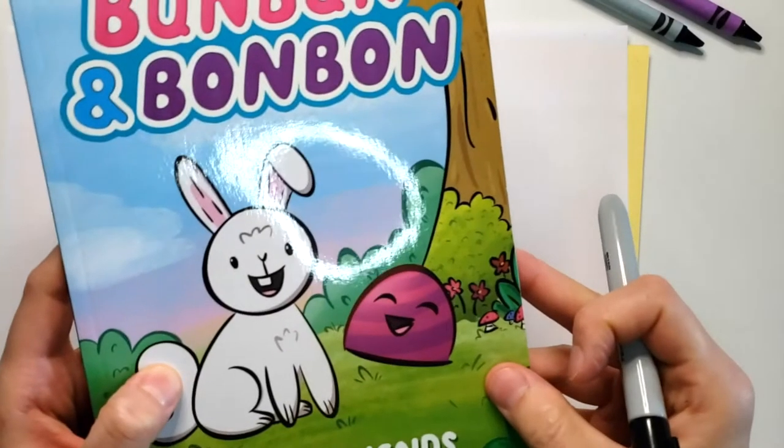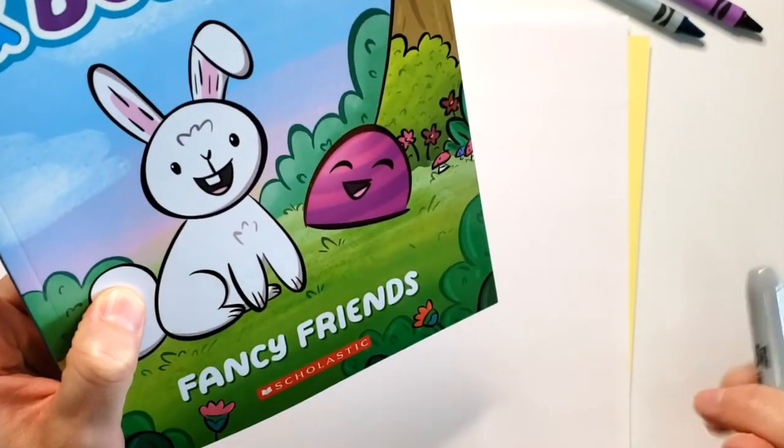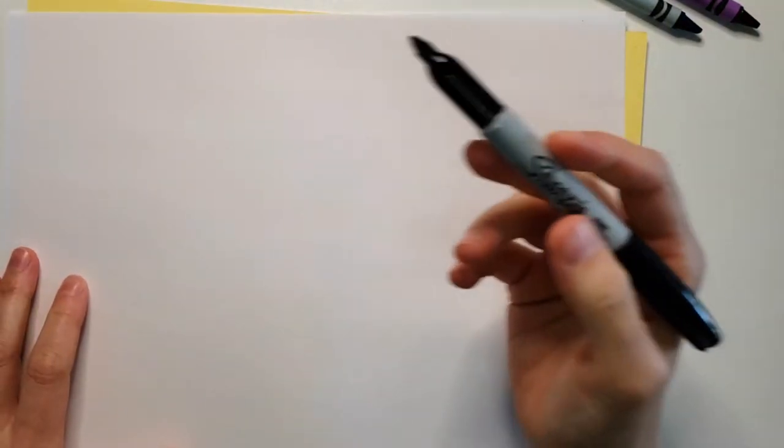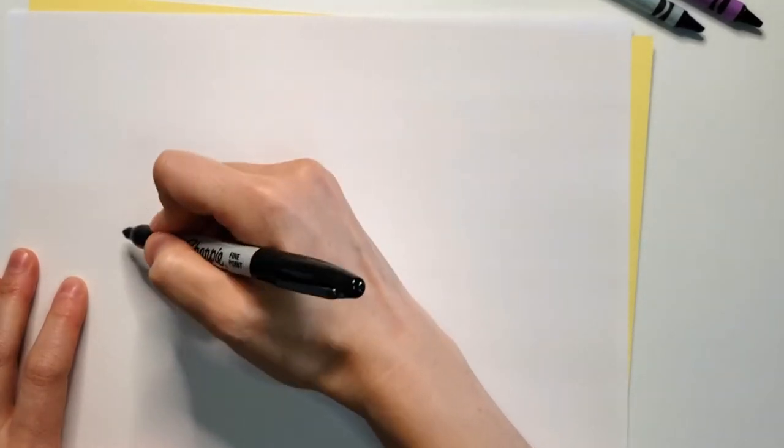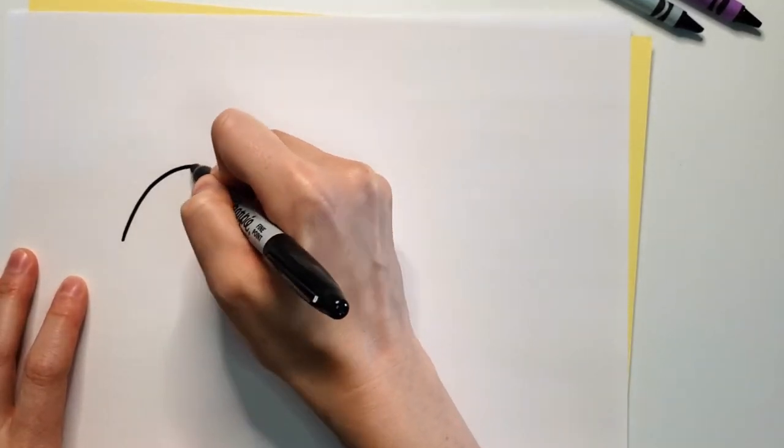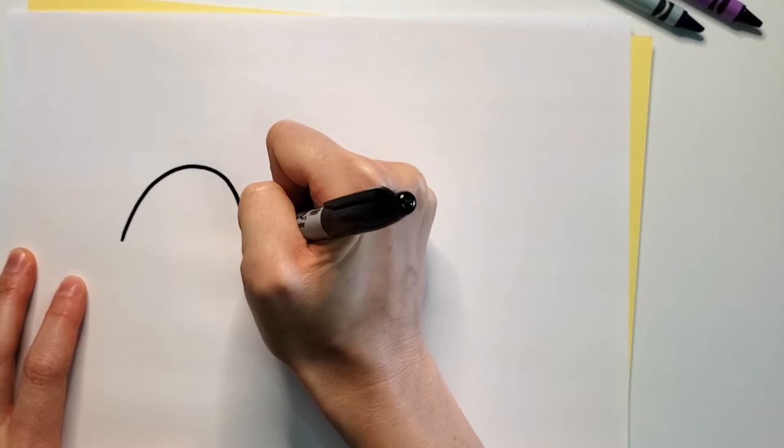Hey everyone, today we are going to be drawing Bon Bon from Bun Bun and Bon Bon right there. So Bon Bon is very simple to draw, so we're going to need to start with a big sort of half circle shape like that.